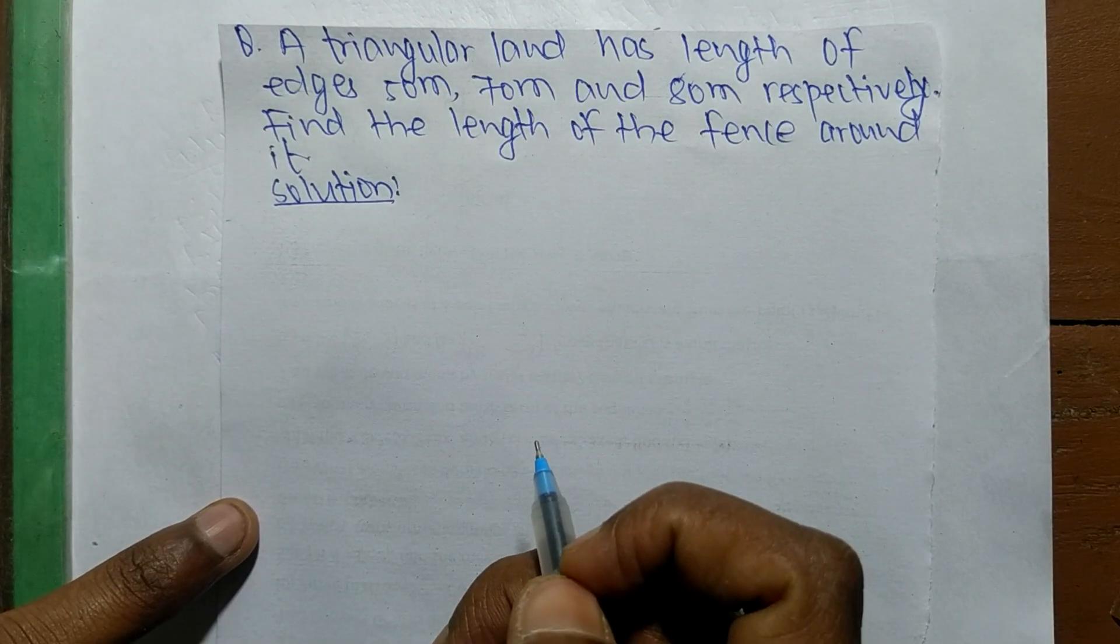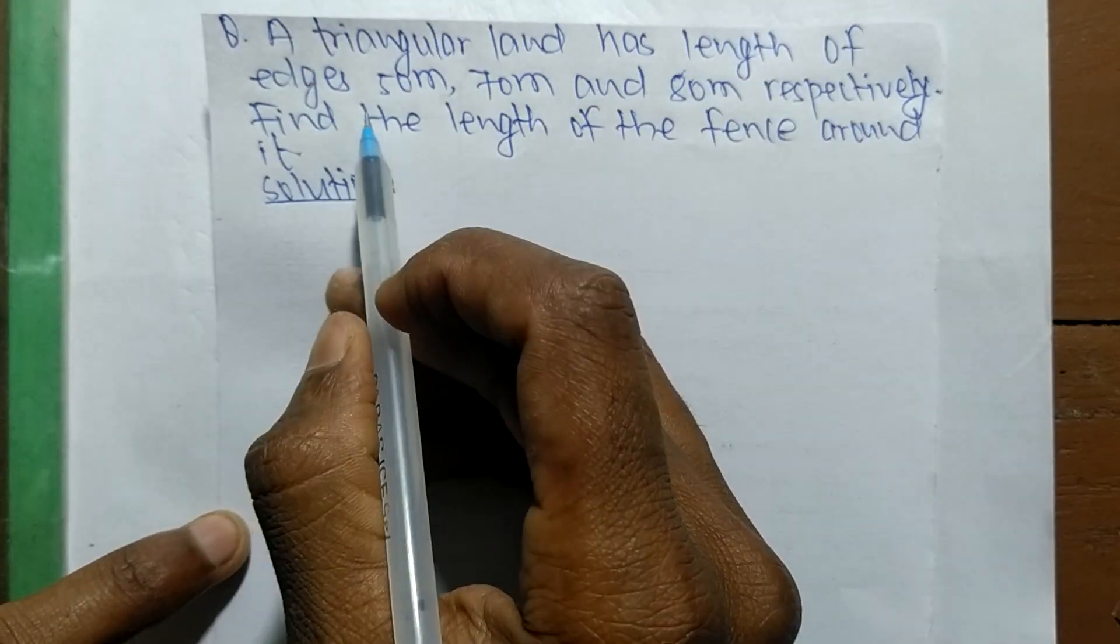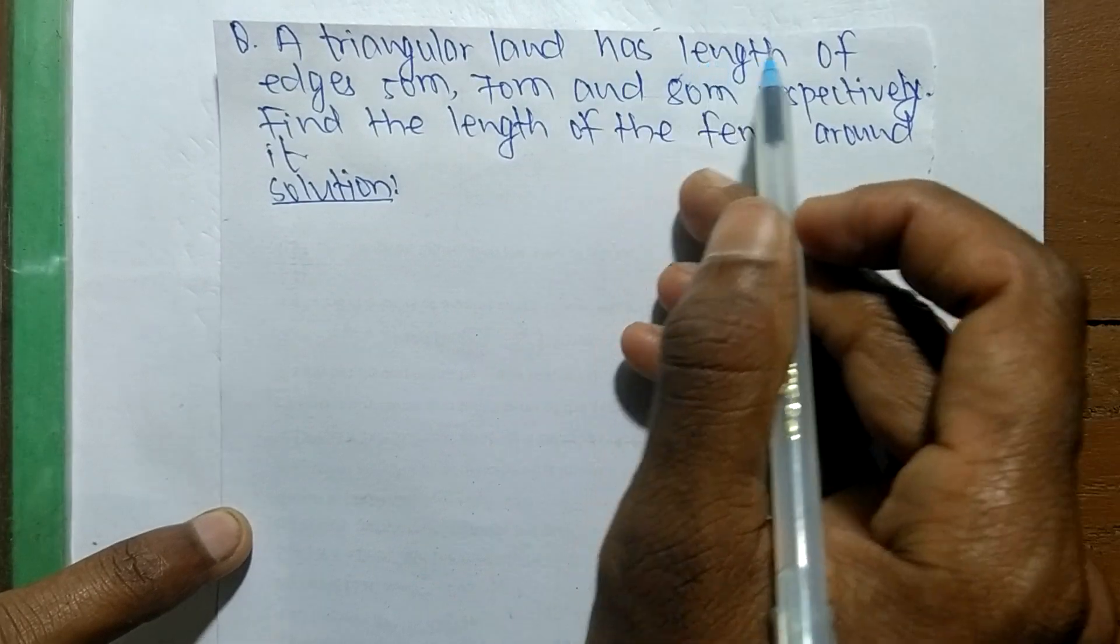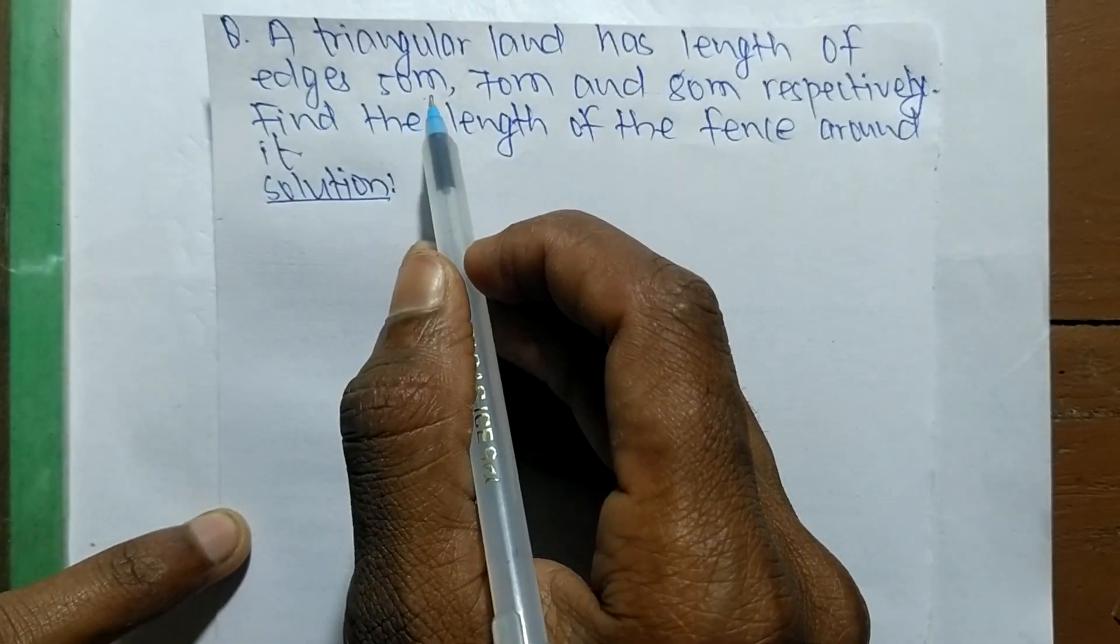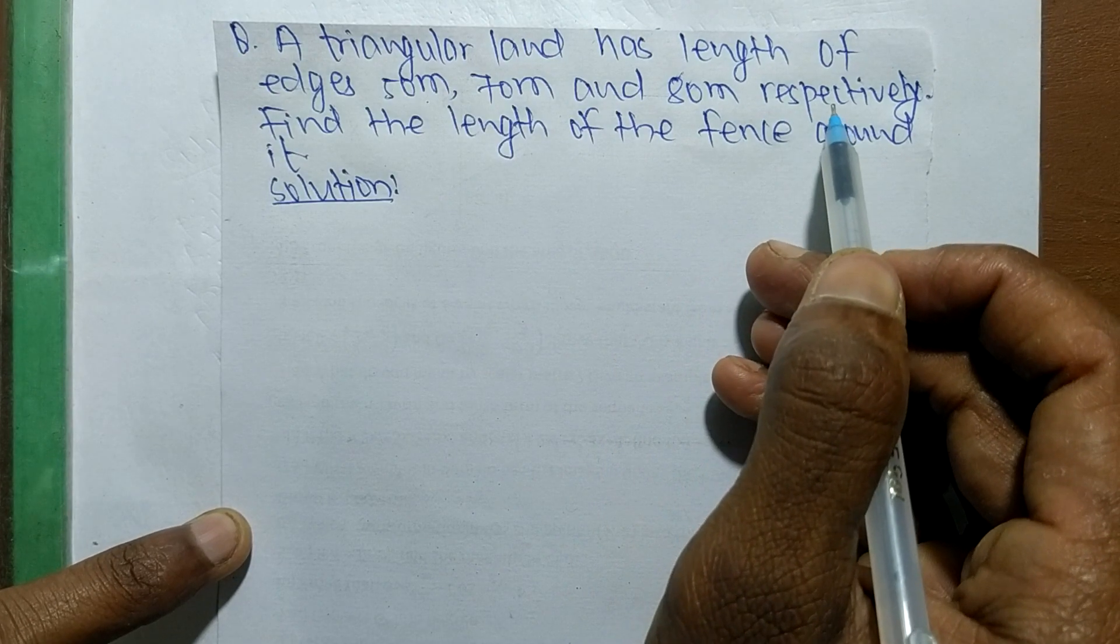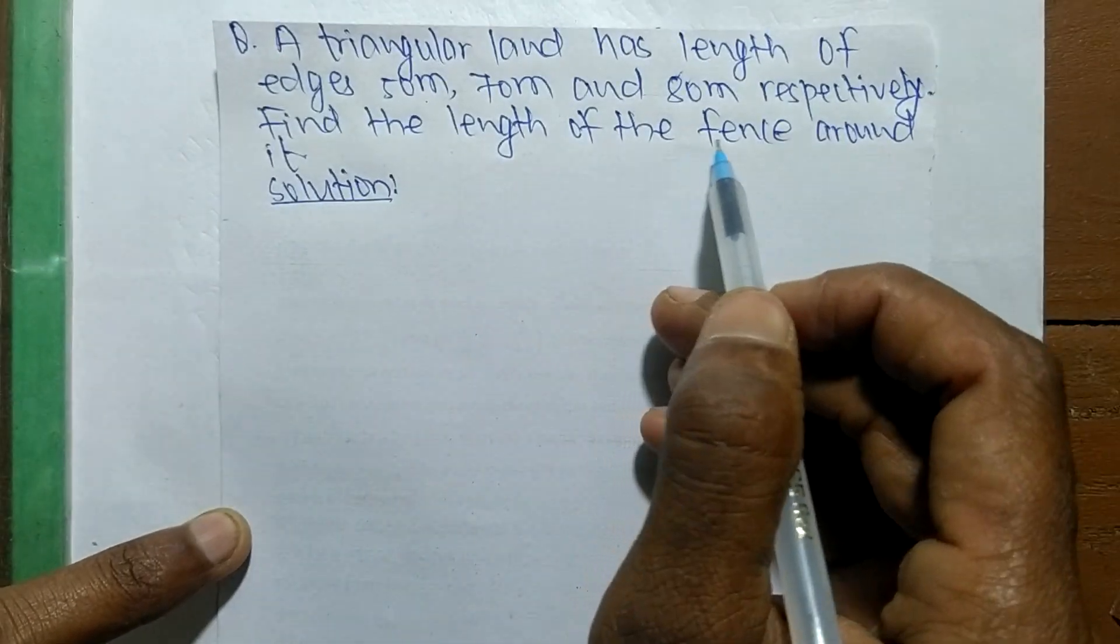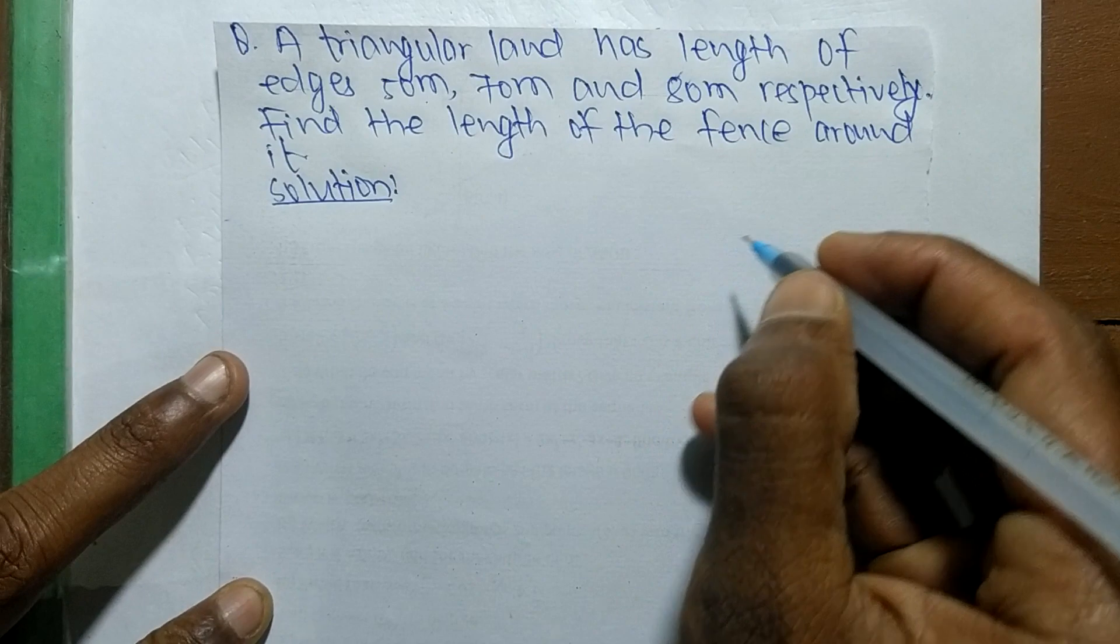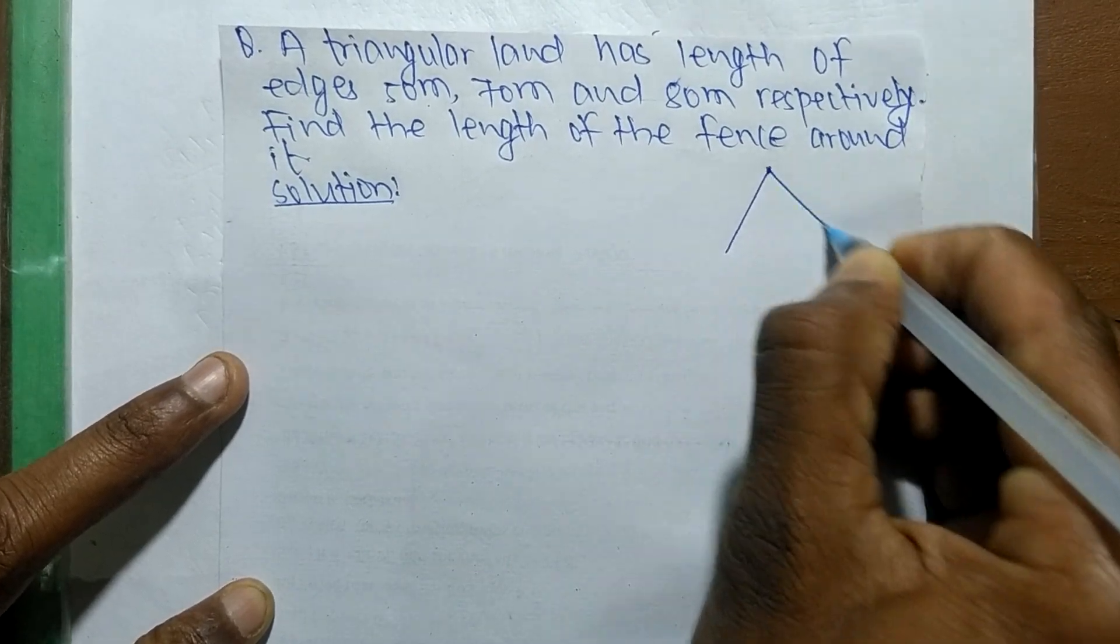Today in this video we have a question: a triangular land has sides of length 50 meter, 70 meter and 80 meter respectively. Find the length of the fence around it. We have a triangular shaped land.